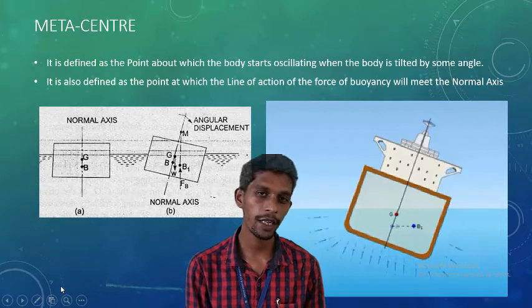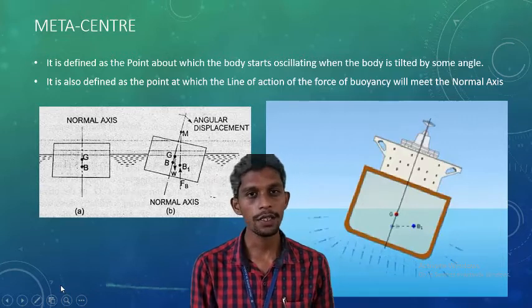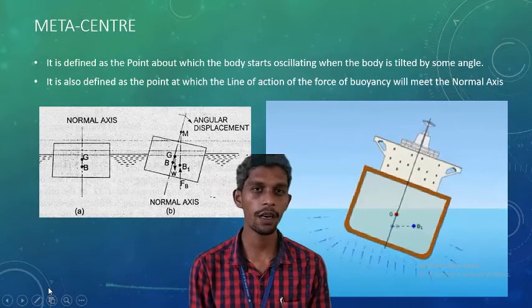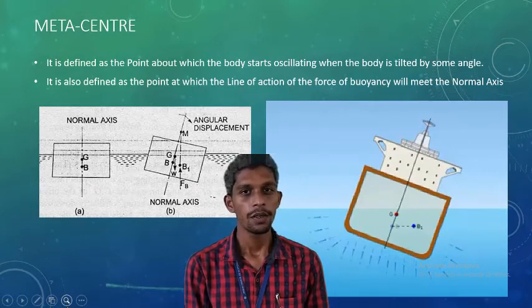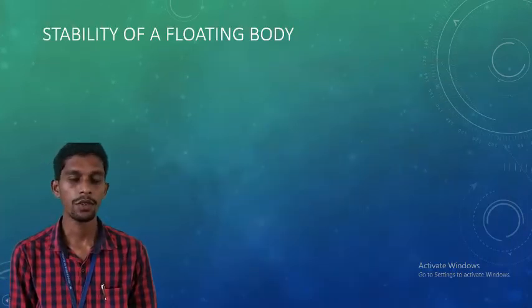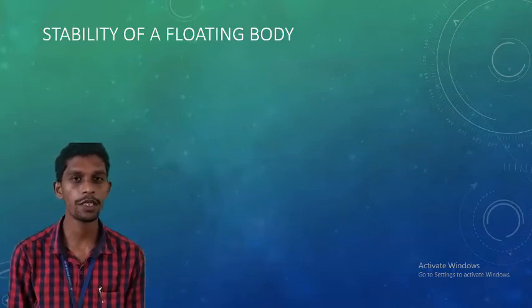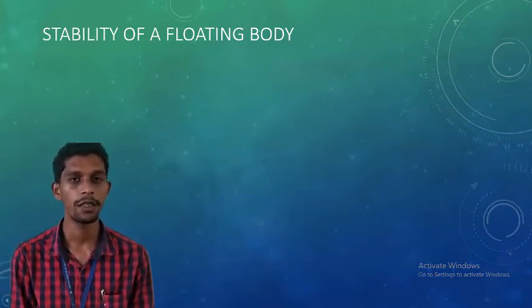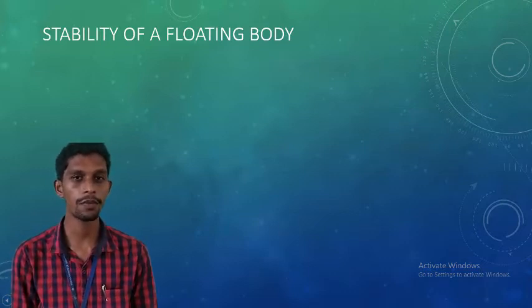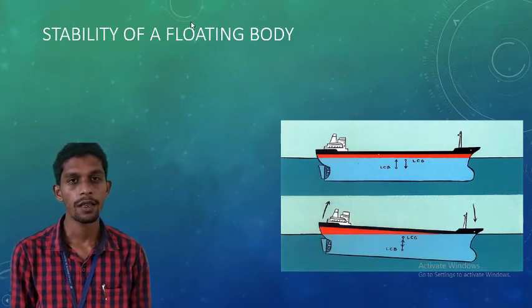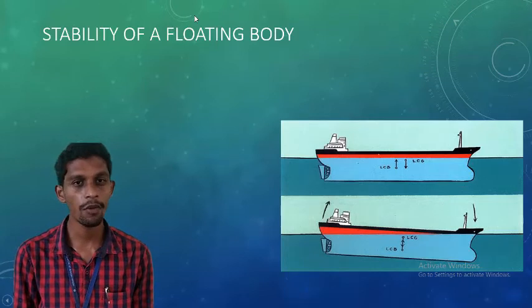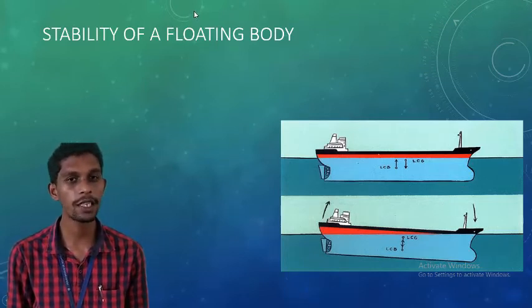Density, the effect of buoyancy force, and the point of metacenter are all very important — these concepts were all explained clearly by Archimedes. We have discussed how objects oscillate and can turn upside down. Now we will discuss the stability conditions of a floating body.